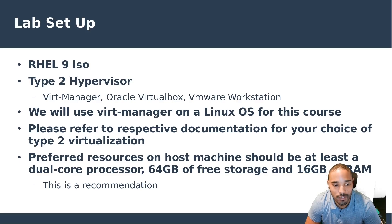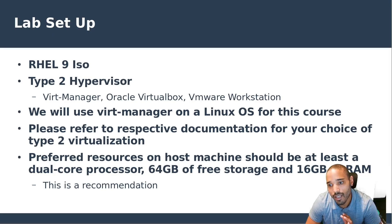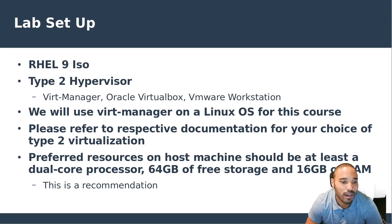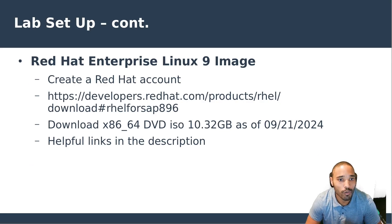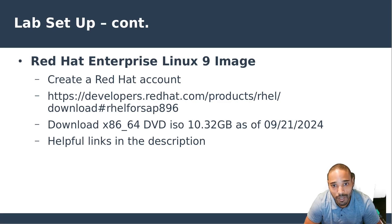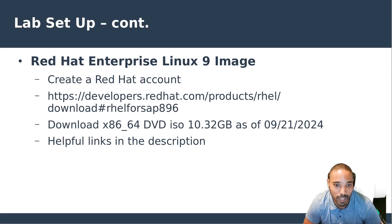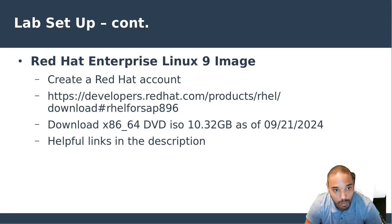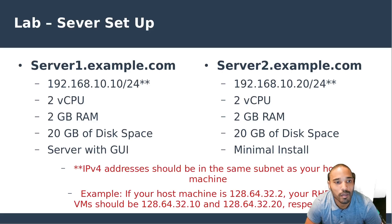On the host machine, the box in front of you should have 64 gigabytes of free storage and 16 gigabytes of RAM. This is a recommendation — you can do it with less if you need to. Then we're going to go to redhat.com, create a Red Hat account, go to the developers page, and download the DVD ISO which is about 10 gigabytes. Any helpful links I'll provide in the description below.